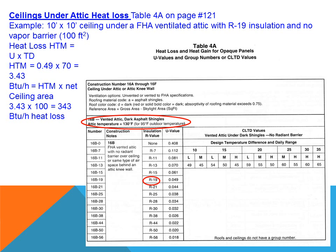Looking at ceilings under attics for heat loss: we look at the square feet of the ceiling. Usually there are no doors or windows in a ceiling unless there is a skylight. We already figured skylights from the window chart, but we subtract out that skylight square footage to arrive at the net ceiling area.